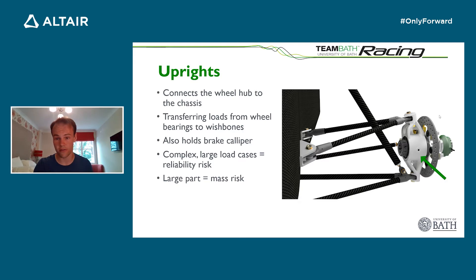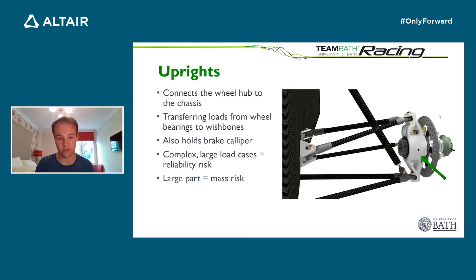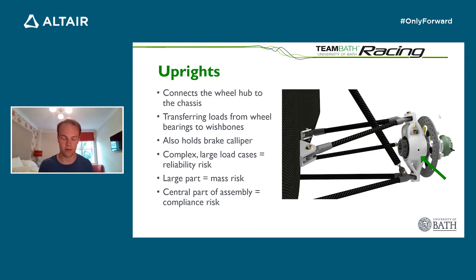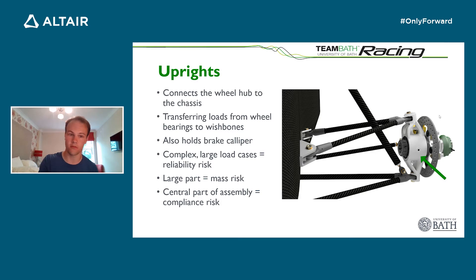The upright is also a very large part compared to the rest of the suspension components — probably the largest — making up a large proportion of the assembly mass, which gives us a large risk of increasing our unsprung mass. And since it's the central part of the assembly, if the upright isn't stiff enough and we have too much compliance within it, we'll see large amounts of compliance amplified throughout the entire assembly. So we have to get the design really spot on for strength, stiffness, and weight to maximise handling performance.